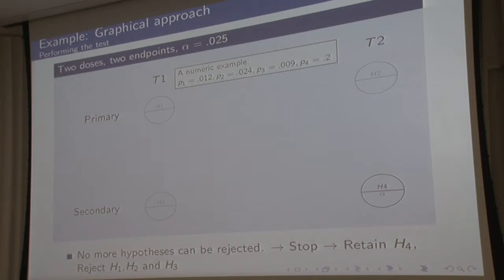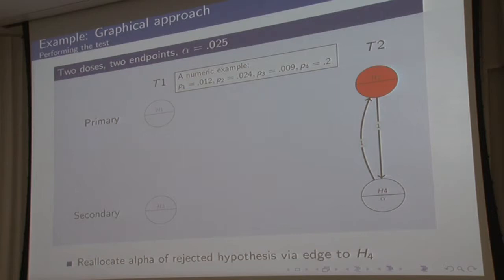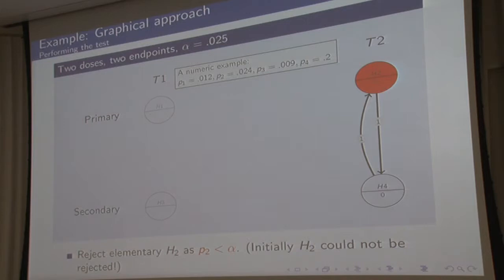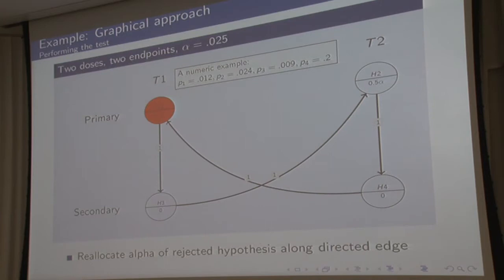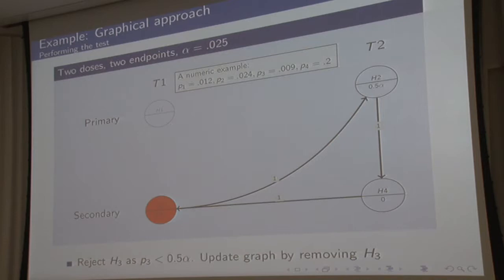Question from the audience: what is the rule for erasing a node? The answer: you simply check whether you can reject an elementary null hypothesis at the alpha level shown at that node. If you can, you delete the node and combine the edges — meaning the next hypothesis then gets a direct edge. Any indirect connections become direct connections when an intermediate node is removed.